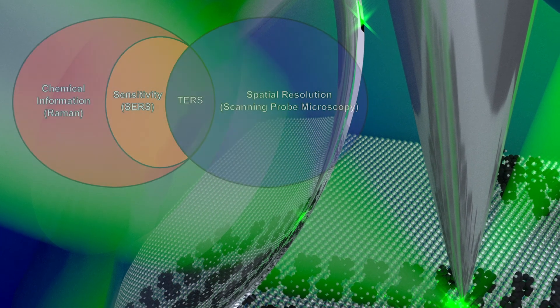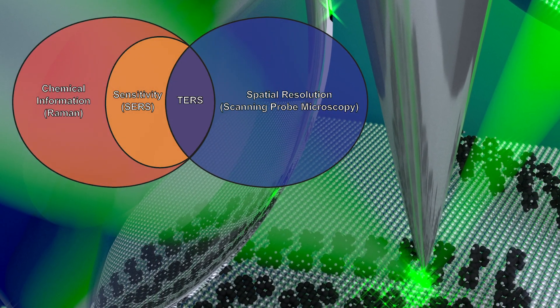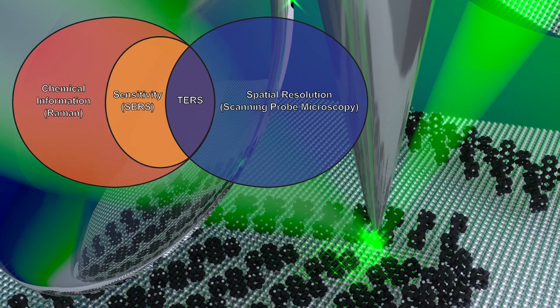To conclude, as a truly tandem technique, UHV-STM TERS occupies a unique position among surface characterization methods. Simultaneous STM and TERS imaging provide real space localization of detailed vibrational fingerprints at the angstrom scale, enabling the study of the effects of highly localized chemical environments on molecules, materials, and reactions.